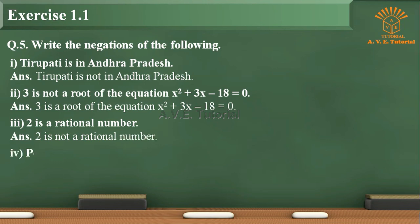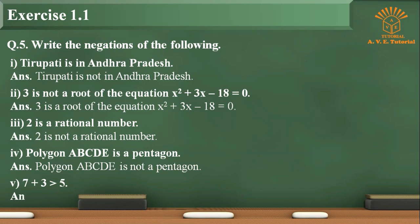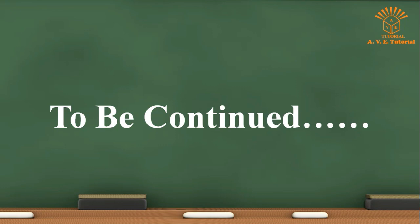4. Polygon ABCDA is a pentagon. Answer: Polygon ABCDE is not a pentagon. 5. 7 + 3 is greater than 5. Answer: 7 + 3 is not greater than 5. End of part 2.